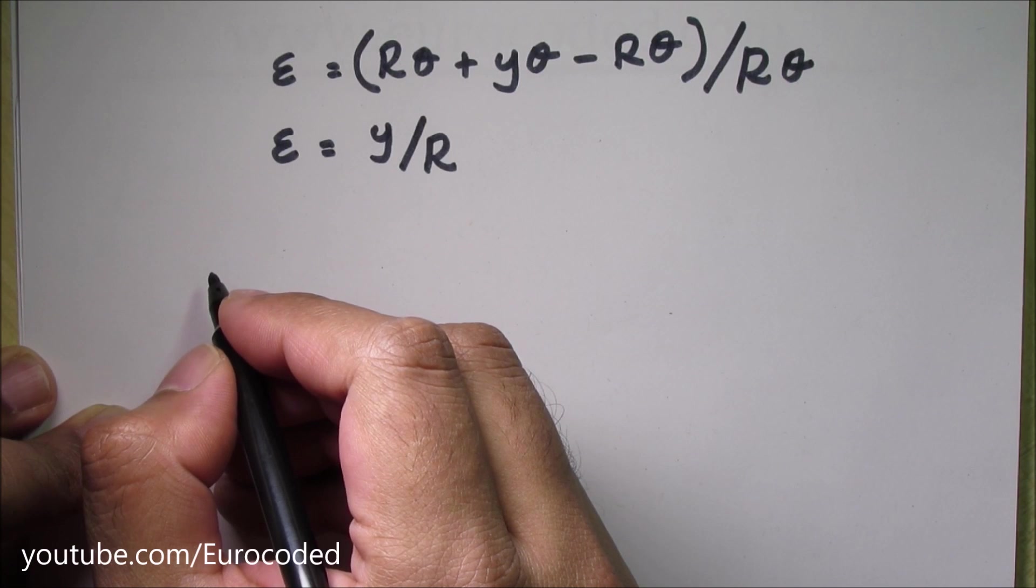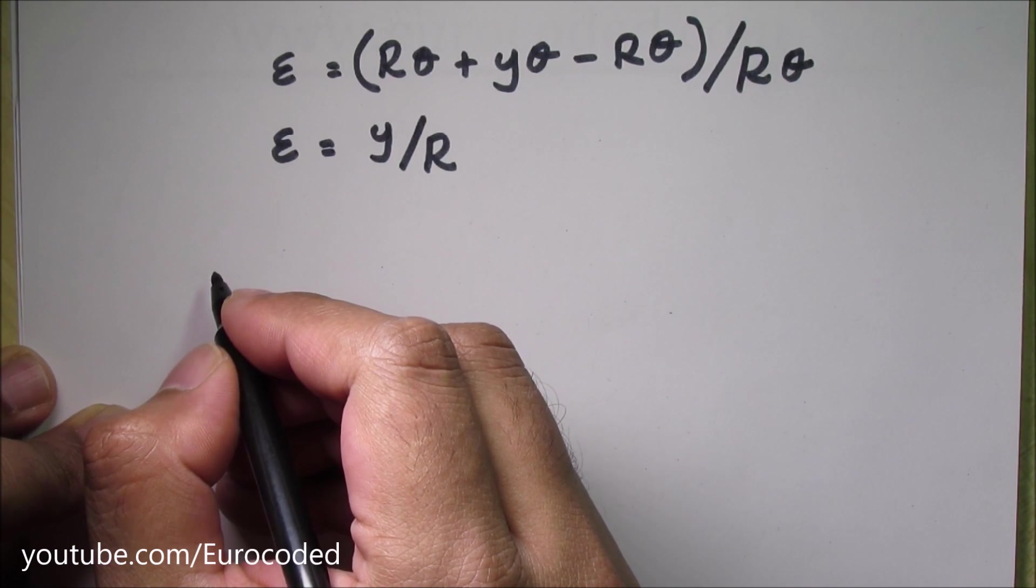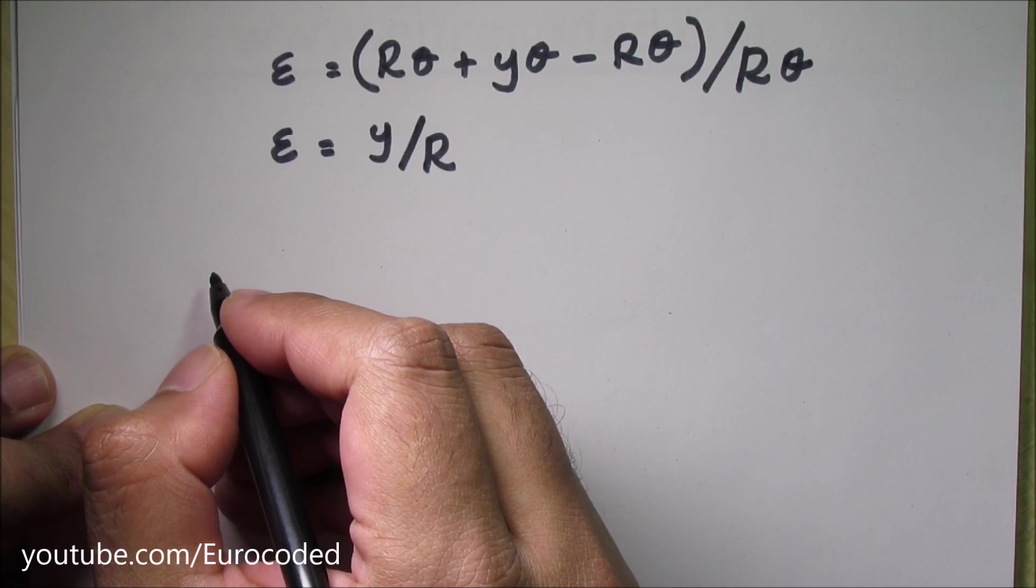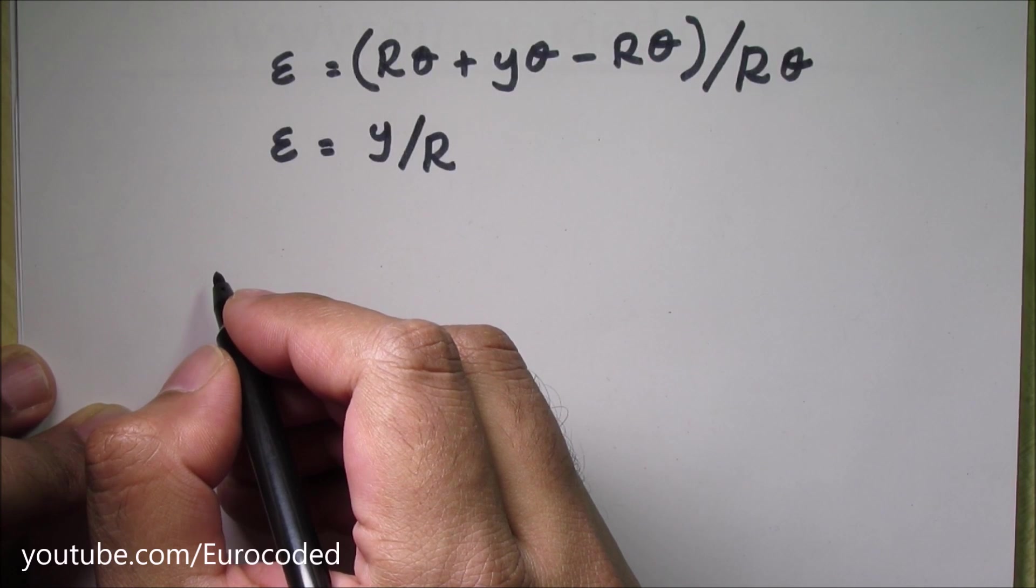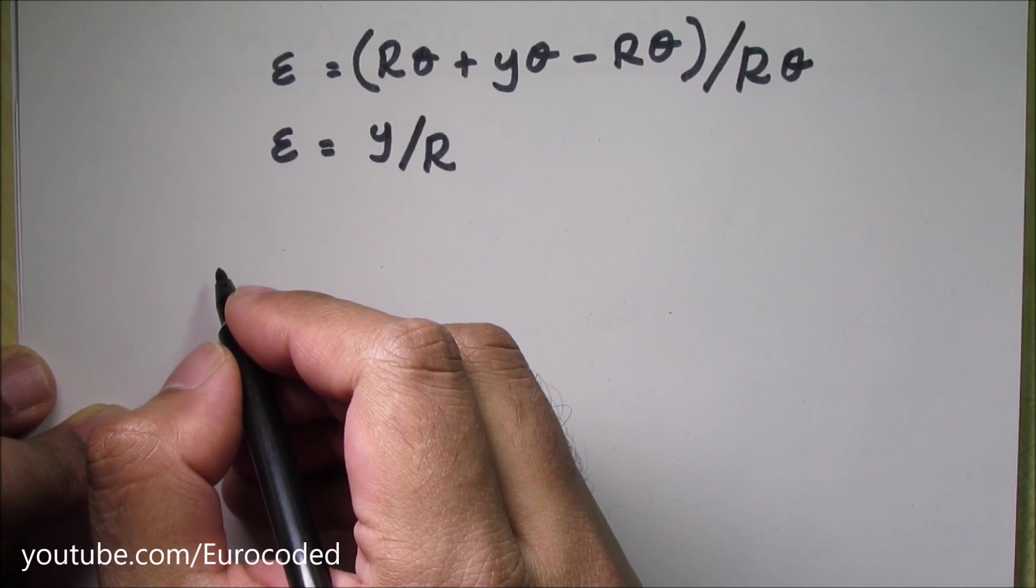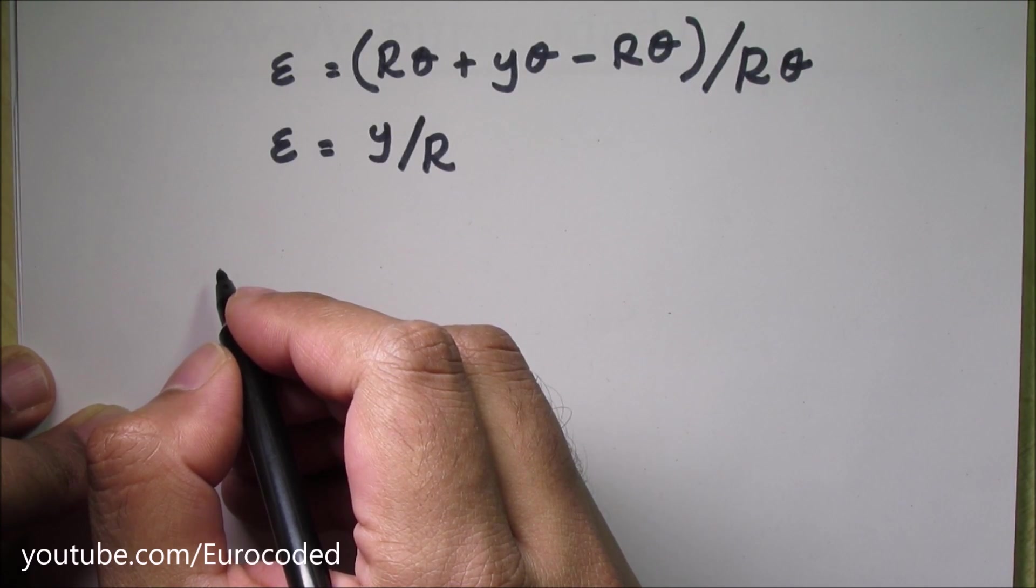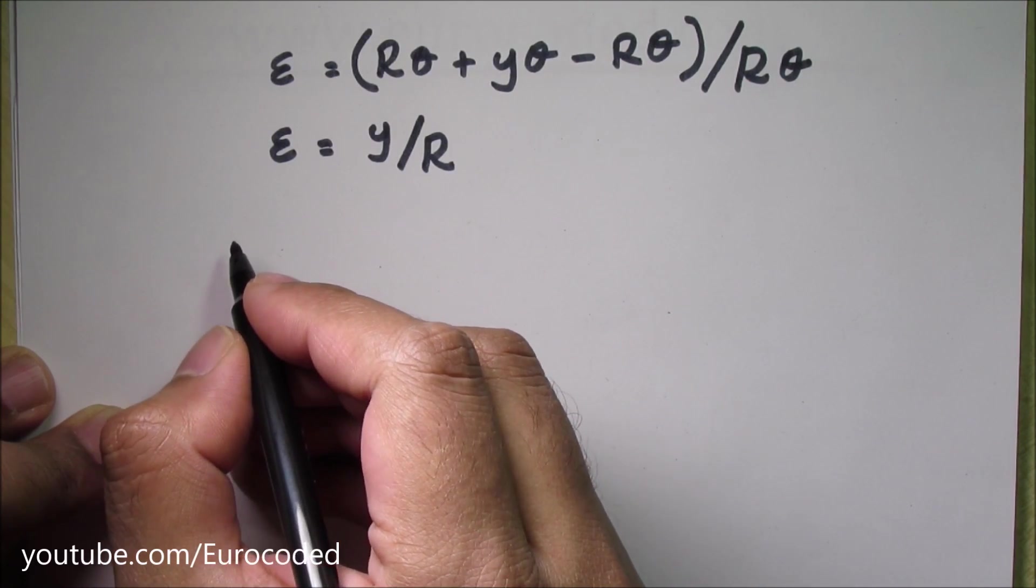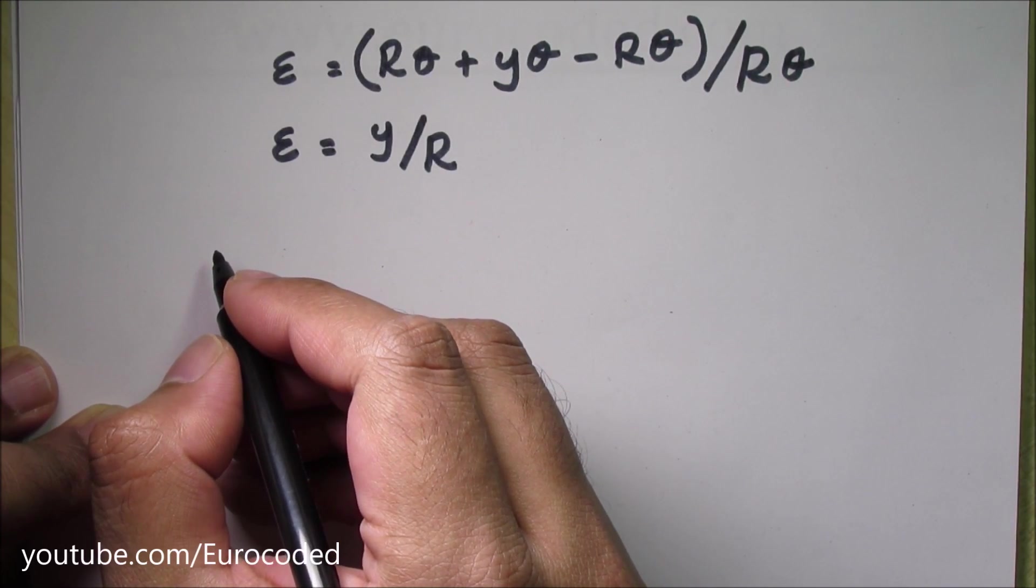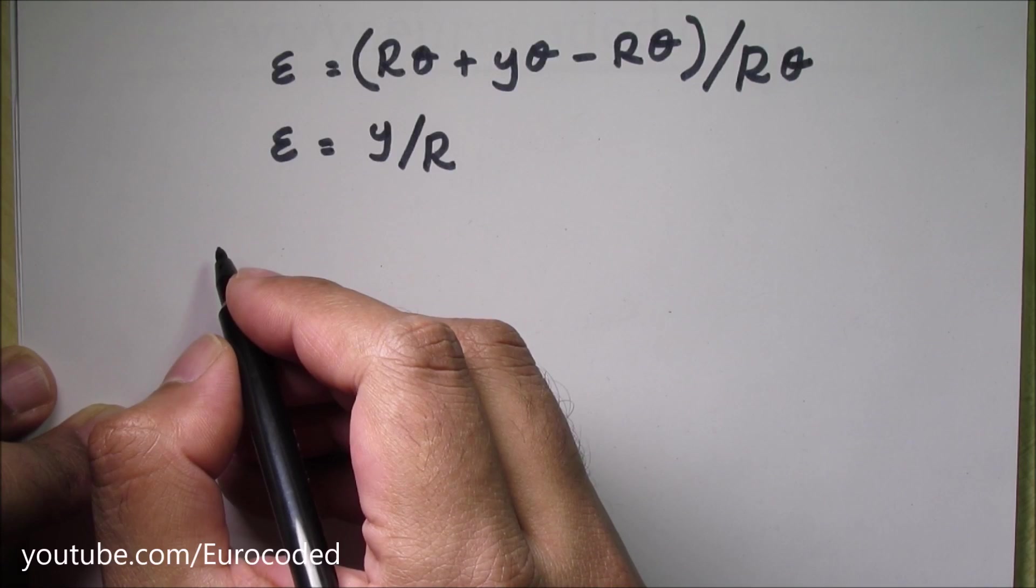Now we know that the modulus of elasticity can be defined as the ratio of stress to the strain along the same axis within the elastic limit. That sounds confusing. However, in other words, that is where Hooke's law can be applied.